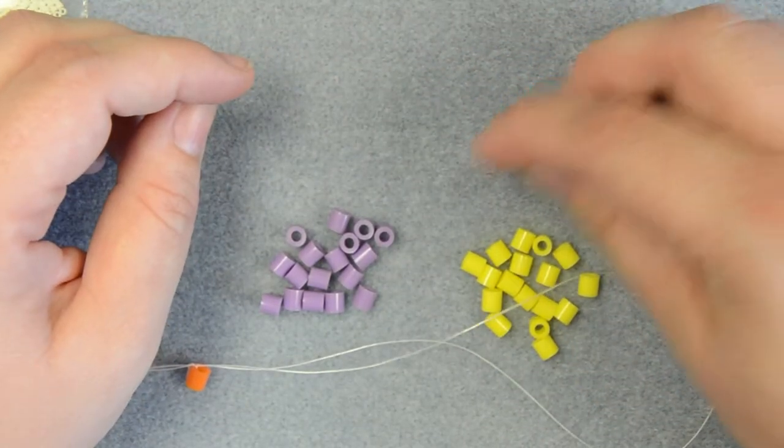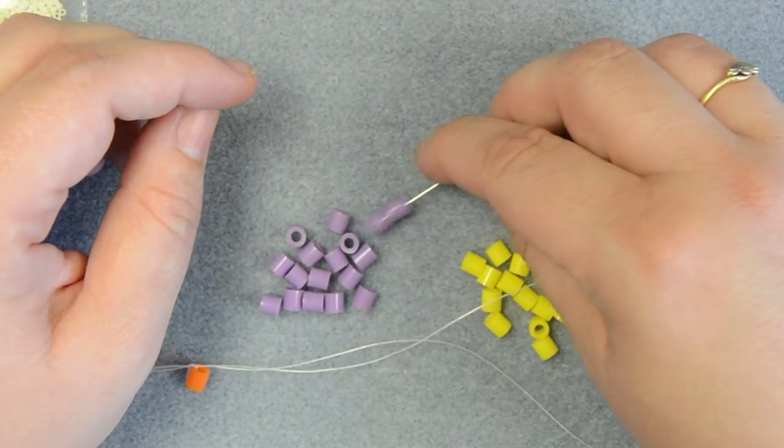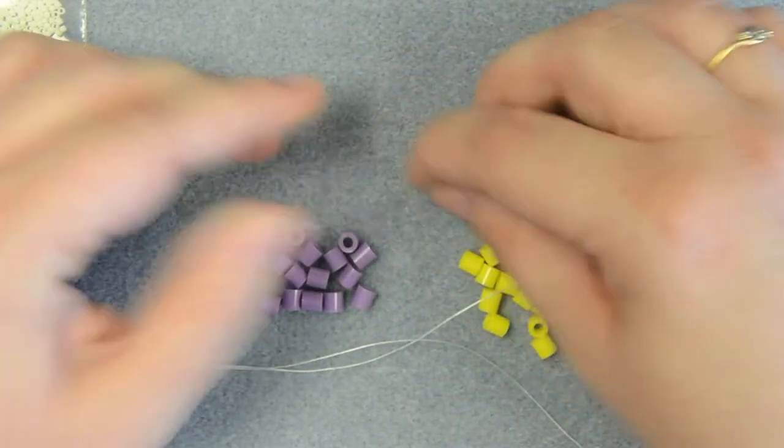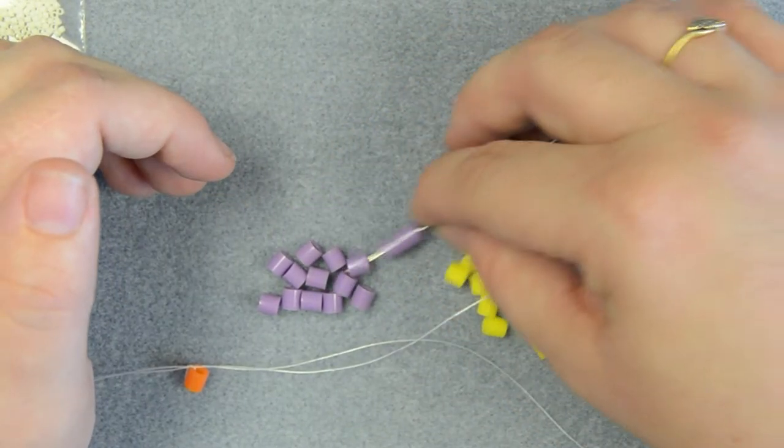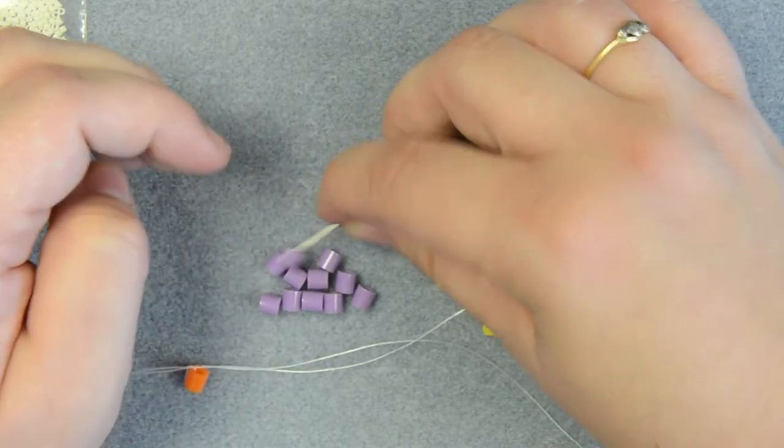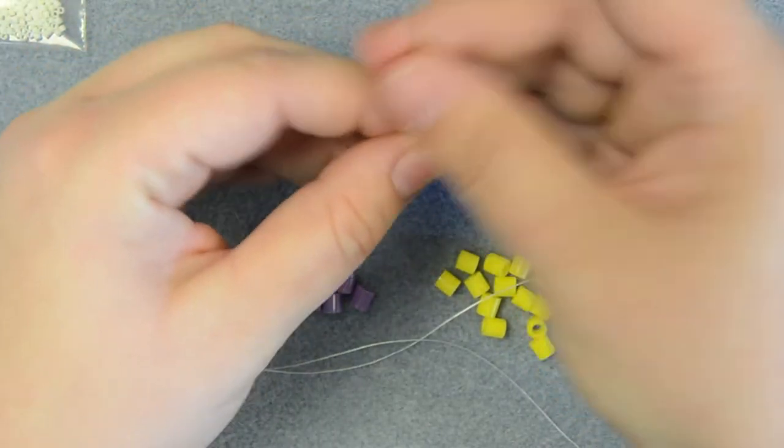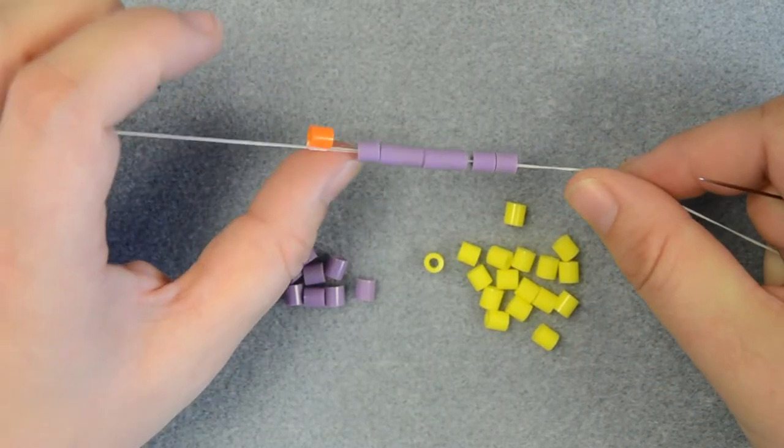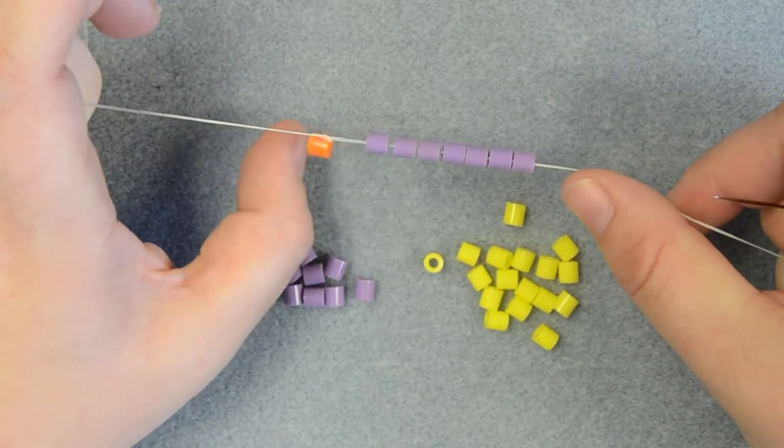We're going to start by picking up the beads that you need for the first two rows. To cover a carrier bead you need seven beads, so we'll work with that. Six, seven. Okay, so slide these down to the end of your thread where I've got a keeper bead just to stop the beads sliding off the end; it will help with tension.